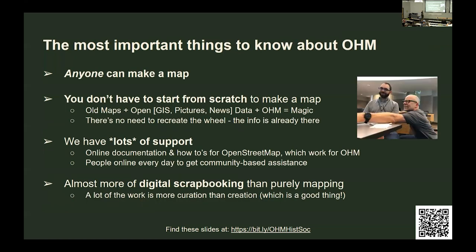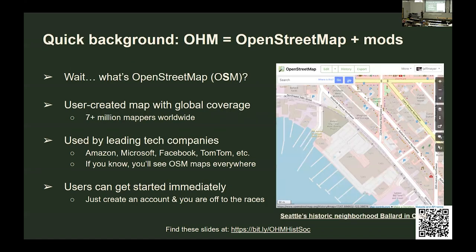First things to know: anyone can make a map — anyone here can make a map. But you don't have to start from scratch. There's already a lot of data out there, a lot of information. You probably already have lists of old addresses and where things were. We have lots of support — online resources to teach you about OpenStreetMap and Open Historical Map, and people you can ask. You can think of this as a really great place to take all your existing information and build a scrapbook. I'm going to explain how you do that, but first I want to talk about what OHM is built on and why you should trust it as a solid platform.